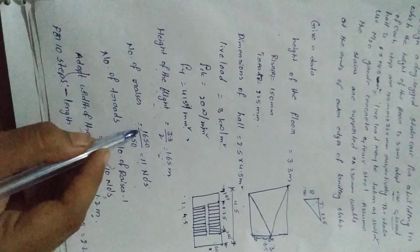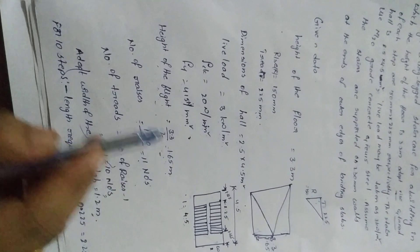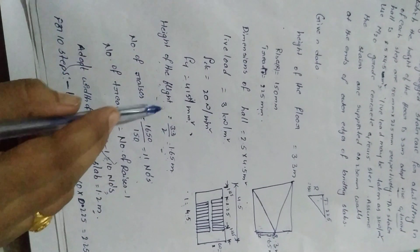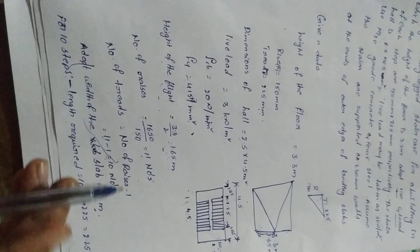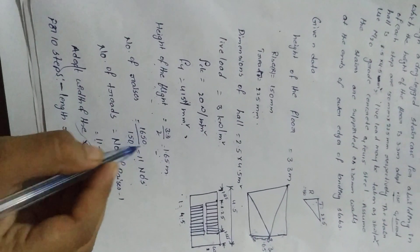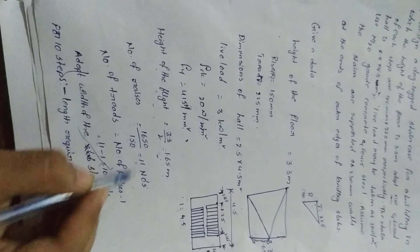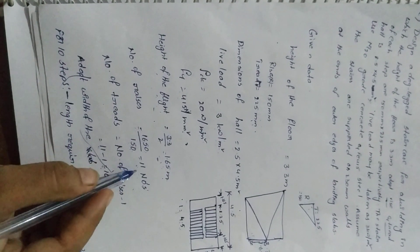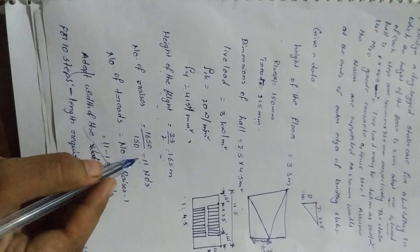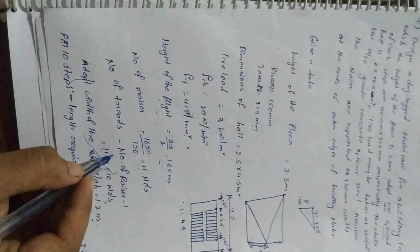Number of rises equals height of flight divided by rise of step: 1.65 / 0.150 = 11 rises. Number of threads equals number of rises minus 1: 11 minus 1 equals 10 threads.